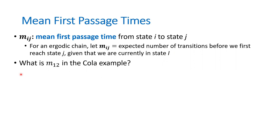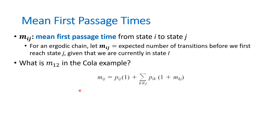So what is m_12 in the cola example? It means: if someone is currently purchasing cola one, how many purchases on average do they make until they switch to cola two? It's not the probability — it's the number of purchases on average. Some of them instantly purchase cola two next, some keep purchasing cola one with 90% probability, but on average we want to see what that number is.